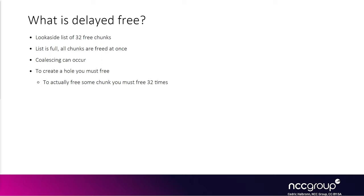In that sense the look aside list is like a normal free list, except it has a special role. There are other scenarios where it acts totally differently. For instance, if the look aside list becomes full and a new chunk is freed, the heap allocator will finally actually free all of the chunks on that list — only at that point can coalescing occur. This mechanism is called delayed free because the freeing of chunks is delayed until the look aside list is full.